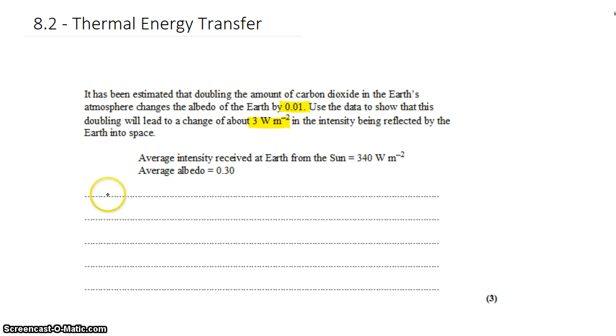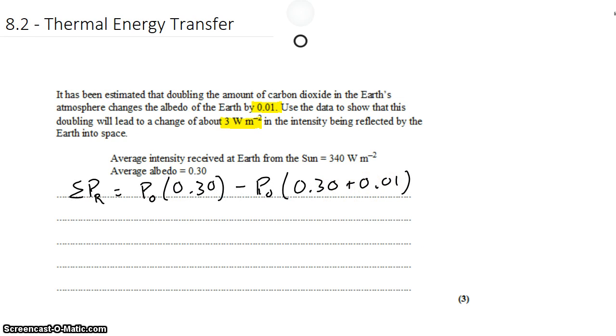So if we look at the change in the power that we reflect, that's the original power coming in times that 30%, and that gives us the power that we would reflect normally. We'll take from that the power coming in times the new albedo, and that's that 30% plus an additional 1%.